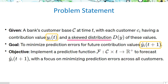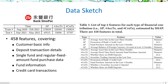We're looking at a customer base of a bank at a given time, where each customer has a measurable contribution value following a skewed distribution. Our aim is to develop a model that predicts future contributions. We utilize data from Bank Sinopak, a leading bank in Taiwan, with 458 features across customer demographics, transactions, fund purchases, and credit card usage, split by time for model training and testing.